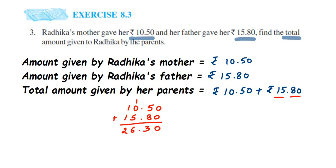So the total amount given by her parents is rupees 26.30. I hope this question is clear — you just have to do addition here. In case you have any other question or doubt, you can drop a comment. Thank you so much for watching.